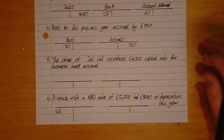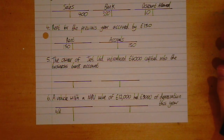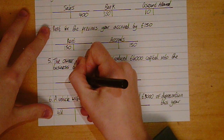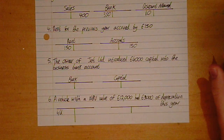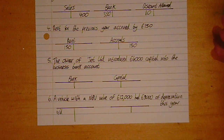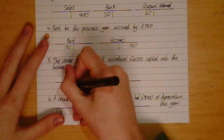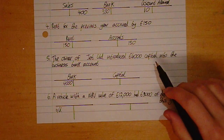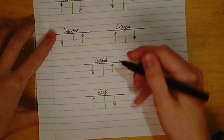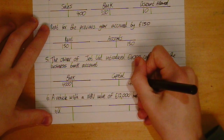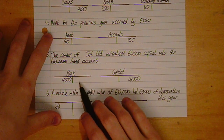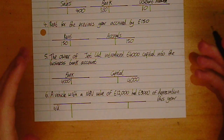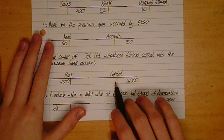The owner of Jet Limited introduced £4,000 of capital into the business bank account. That must mean money in, so bank is debited £4,000. And capital goes up on the credit, so we credit £4,000. Now say the owner drew £2,000 of drawings out. We'd credit the bank because we've lost £2,000 from the business. However, this is now drawings, and drawings goes against capital, so we debit drawings £2,000.